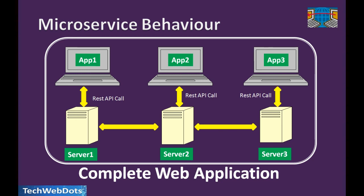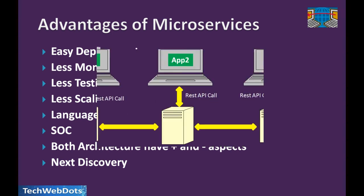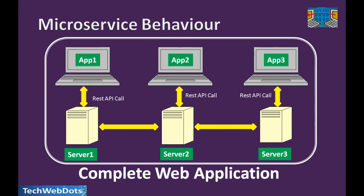Both monolithic and microservices architectures have their own advantages and disadvantages. If your application is not very large, doesn't belong to the e-commerce scale, and has a smaller user base and footprint, monolithic architecture can be a good choice — no service discovery is required since everything is on the same server, and there's no complex configuration. But if you have a bigger application with a large user base, microservices architecture is the better option.